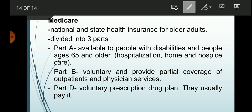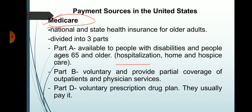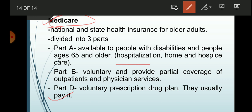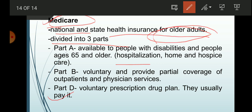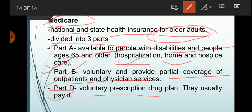Now let's discuss payment sources in the United States: Medicare and Medicaid. Medicare is a national health insurance for older adults, divided into Part A, Part B, and Part D. Part A covers hospitalization, home, and hospice care for people with disabilities and those ages 65 and older. Part B is voluntary and provides partial coverage of outpatient and physician services, paying roughly 50% of physician service costs. Part D is a voluntary prescription drug plan.